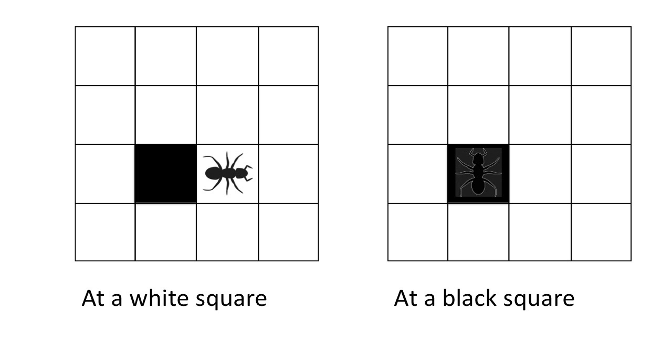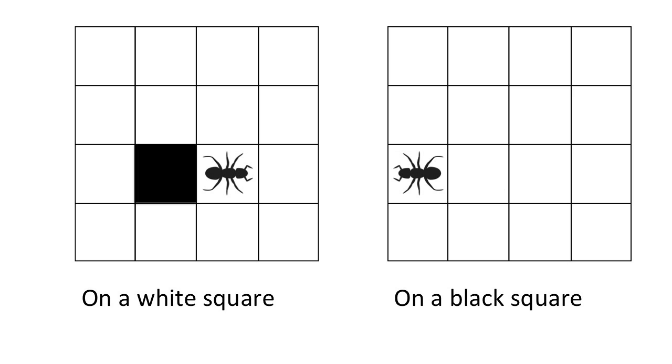Or 2. If the ant starts at a black square, turn 90 degrees left, flip the color of the square, and move forward one unit.